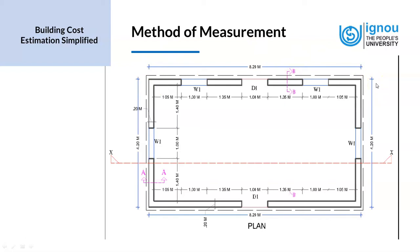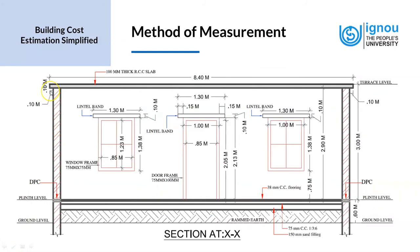Similarly, looking at the width of the room, the outer wall to outer wall is 4.2 meters, and the roof slab has a projection of 0.1 meters on both sides. So the width of the roof slab is 4.4 meters. We now have three dimensions: length 8.4 meters, width 4.4 meters, and the thickness of the roof slab is 0.1 meters.